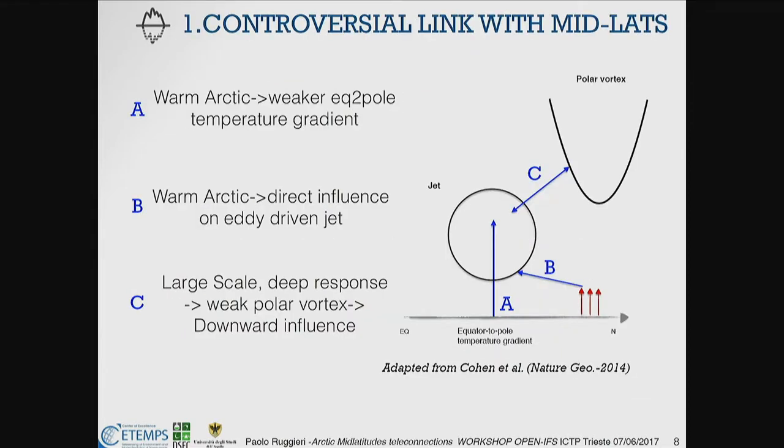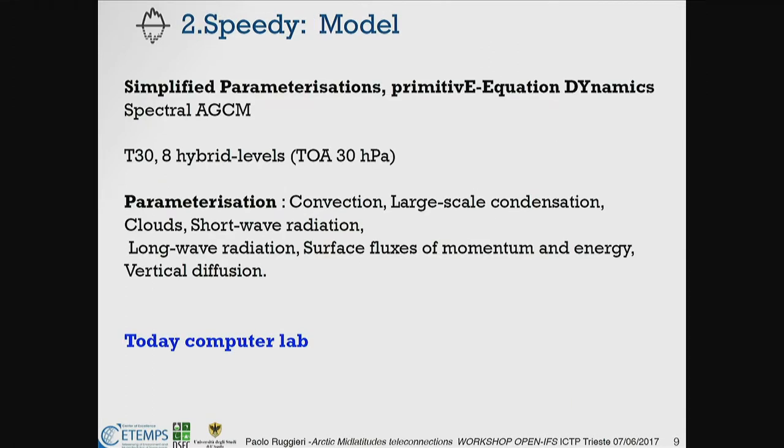At this stage, the community has not identified the precise mechanism for this interaction, and essentially all the components that are important for mid-latitude weather seem to be involved. The basic idea, summarizing from a paper called Natalia, is that when you warm the Arctic you change the equator-to-pole temperature gradient, but you also induce a direct interaction with the low-level, eddy-driven jet. These changes in the jet can eventually affect circulation in the stratosphere, which can then propagate the signal downward and give a delayed response. These are more or less the ingredients of what I'm going to show in this talk.